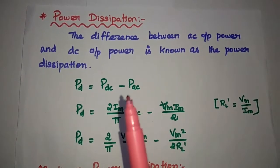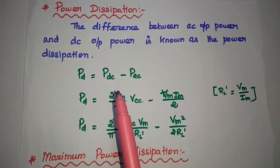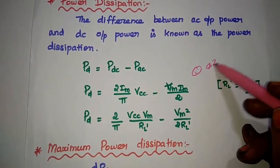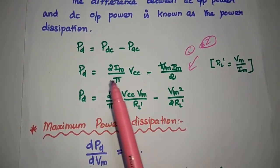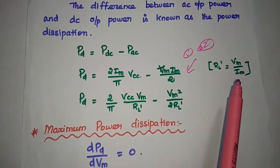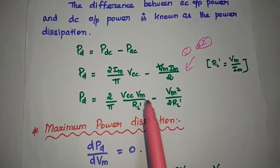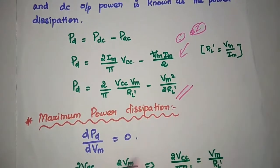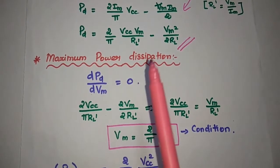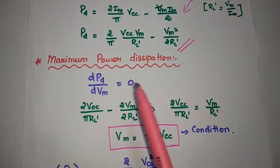Next is power dissipation. Power dissipation is the difference between the DC output power and the AC output power. The dissipated power equals DC power minus AC power. Substituting the first and second equations, we get: Pdiss = (2Im/π) × VCC − (Vm × Im/2). Since RL' = Vm/Im, we can substitute to express Vm² / (2RL'). This gives the power dissipation value.